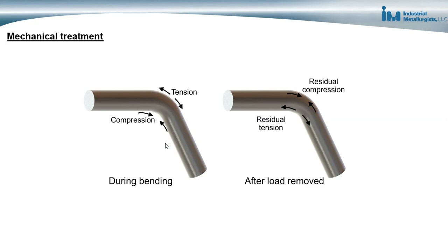When the stress is removed, the permanent deformation remains, but there is a portion of the deformation associated with elastic deformation that is reversible. When the stress is removed, the elastic portion tries to relax and push the metal back towards its original shape — and that's where residual stresses can arise.